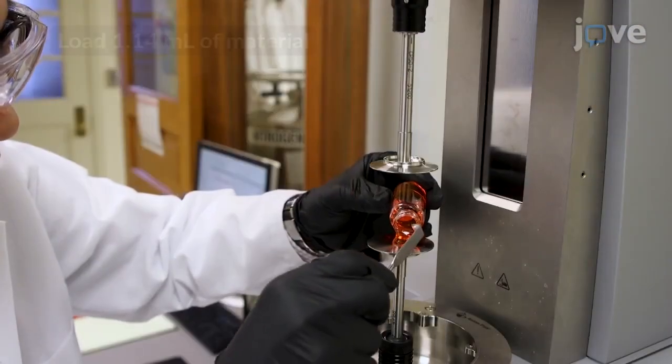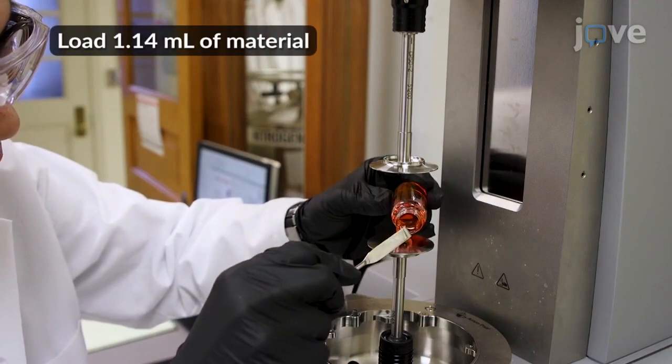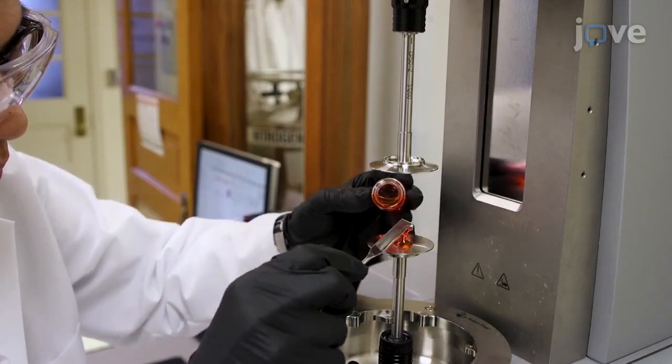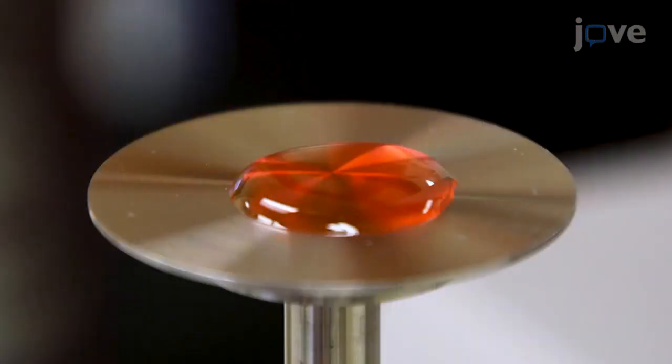With a spatula, load the material onto the top of the bottom geometry. Ensure that no air bubbles are entrained in the sample in the rheometer.